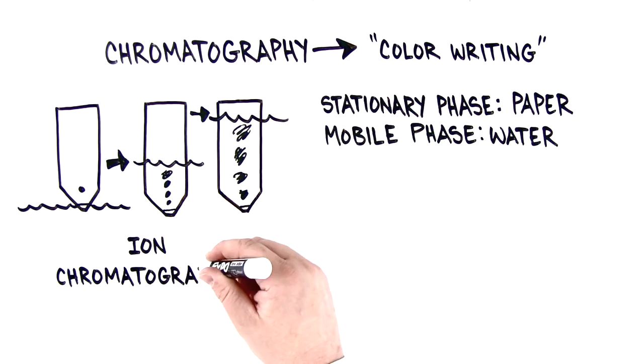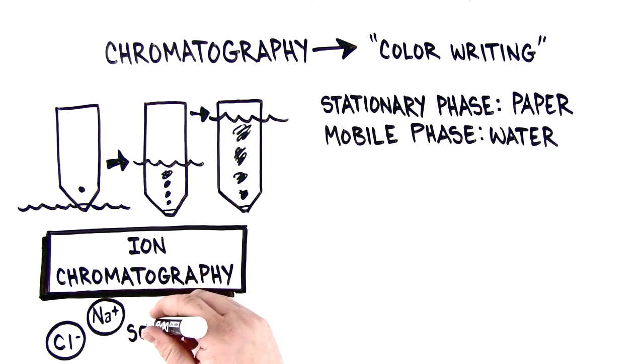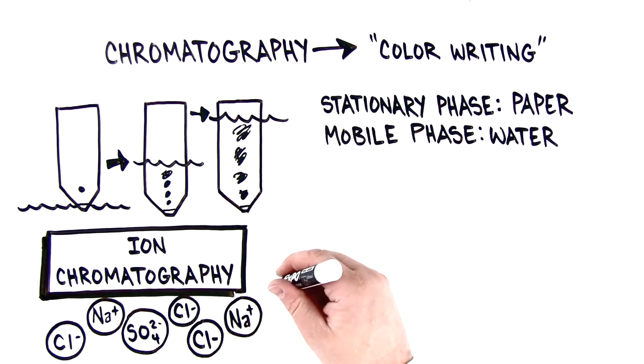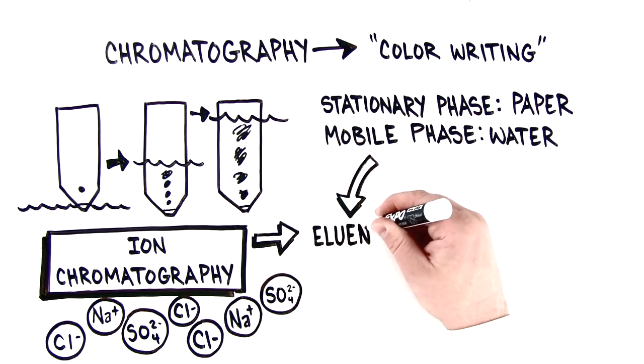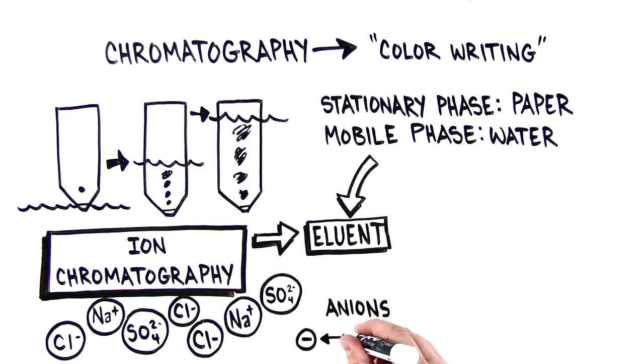Ion chromatography is the separation of mixtures of ions. There are many variations in the chemistry of the stationary phases in order to optimize separations of different target analytes. But here let's discuss the mobile phase or eluent used for the separation of anions or negatively charged ions.